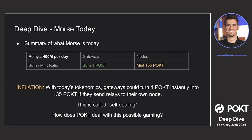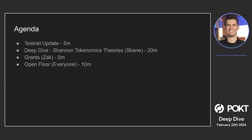I wanted to do a deep dive into Shannon tokenomic theories. This is not stuff that has been fully flushed out — this is kind of where we're at and where our mind is. The idea is we can start communicating what tokenomics might look like in Shannon and some mechanisms that we're creating. From there, we're able to get community feedback and contributions, because there are a lot of elements that go into tokenomics and you can't expect one team to see everything from every angle.